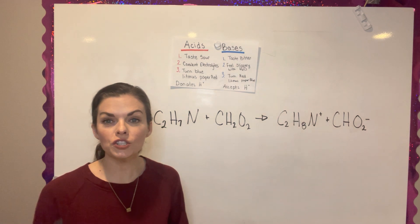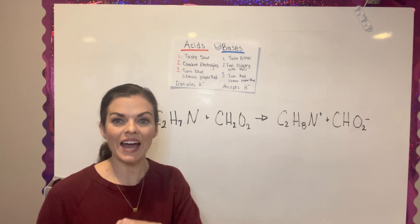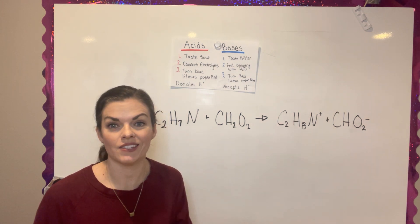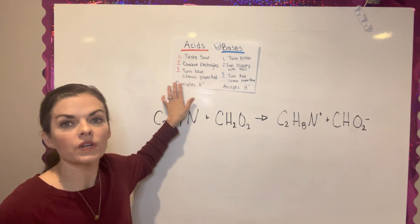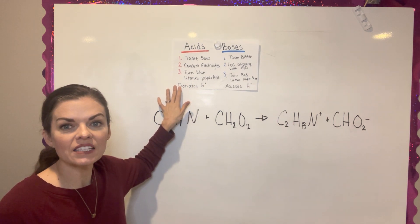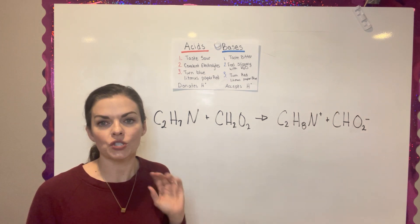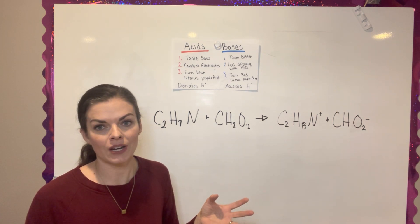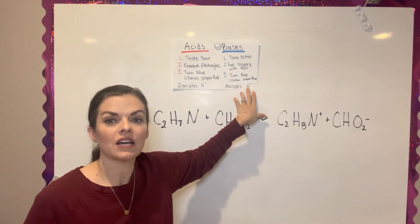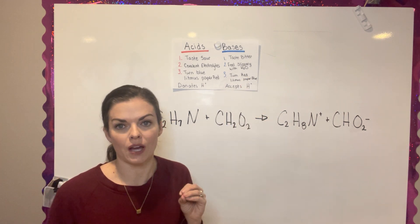For question number three, I'm actually going to add onto my definition of an acid and a base. From the reading, you will learn that an acid is a compound that has a hydrogen, one or two or even more, that it donates. So it donates a hydrogen ion and a base is a compound that accepts a hydrogen ion.